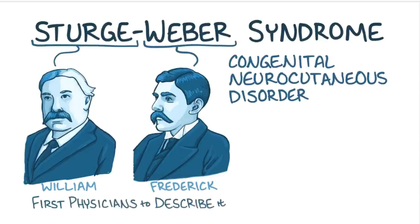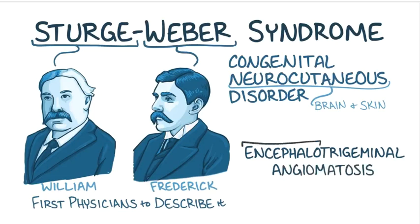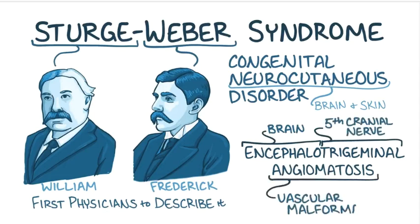It's neurocutaneous because it affects the brain and the skin. In fact, Sturge-Weber syndrome is also called encephalotrigeminal angiomatosis. Encephalo refers to the brain, trigeminal refers to the trigeminal or fifth cranial nerve, and angiomatosis refers to a vascular malformation.